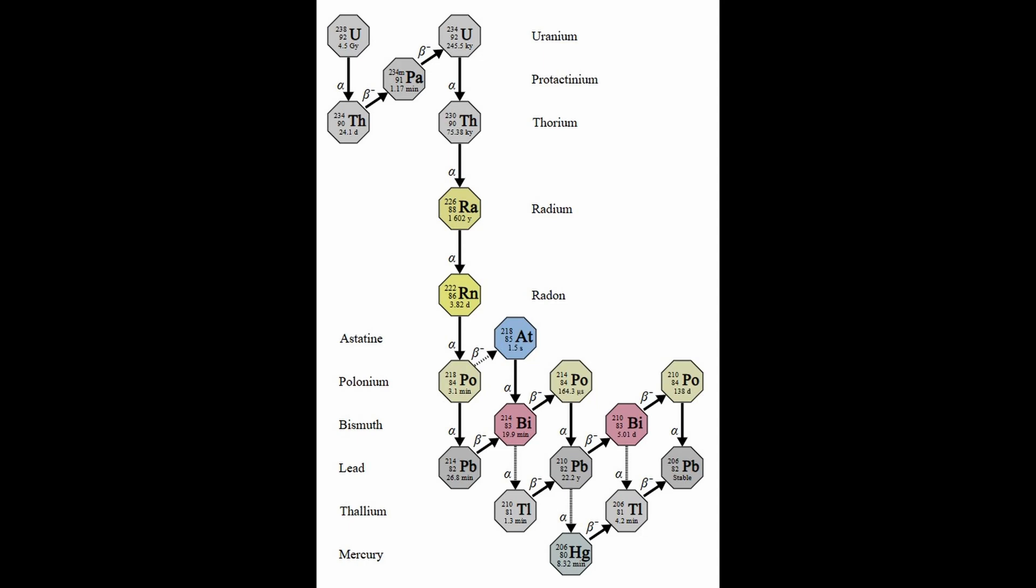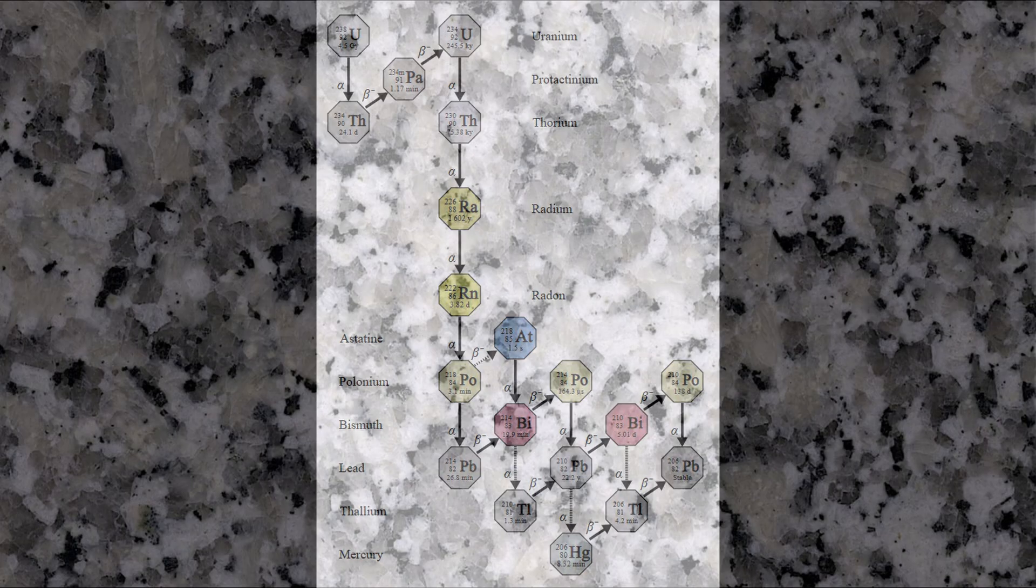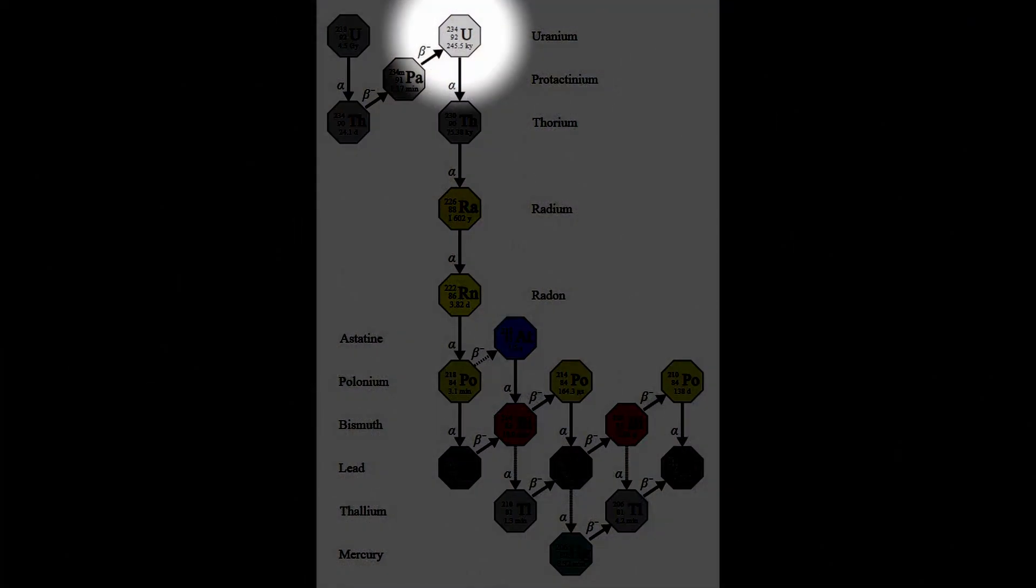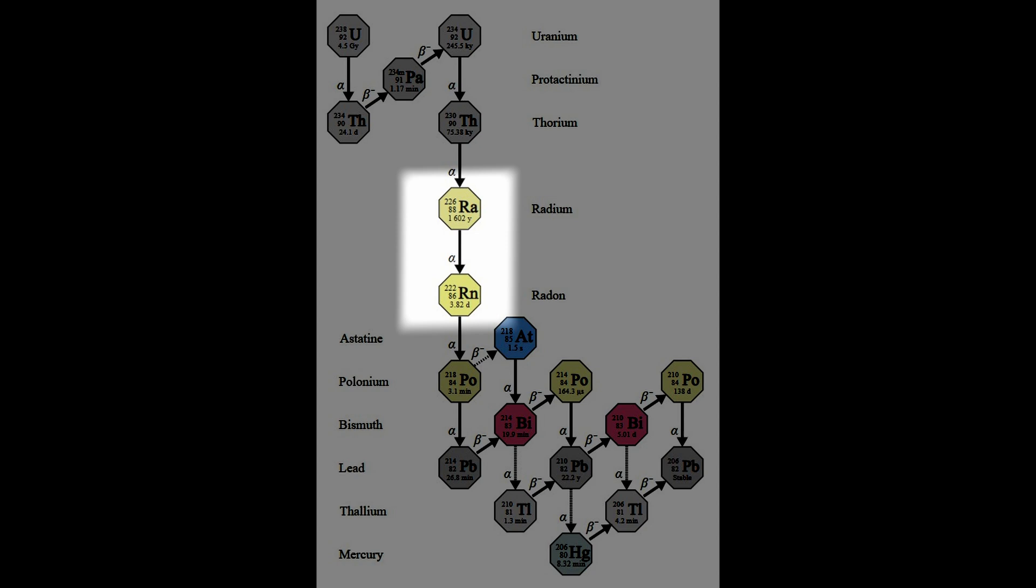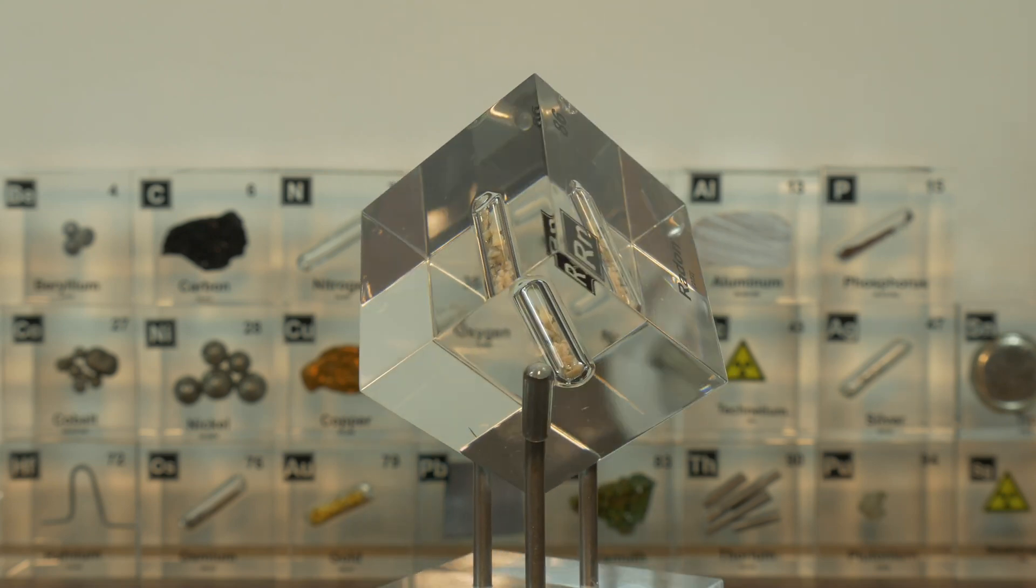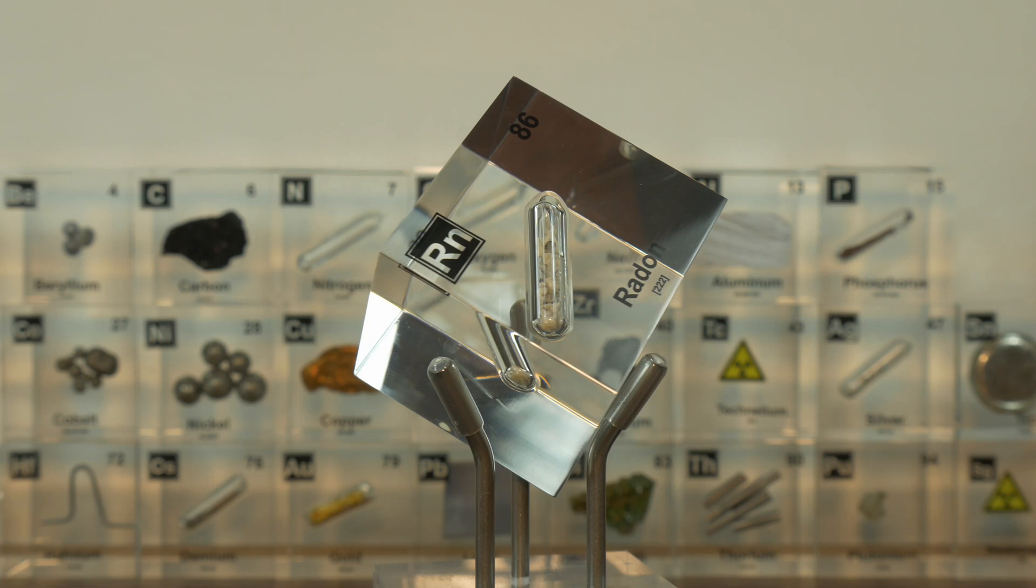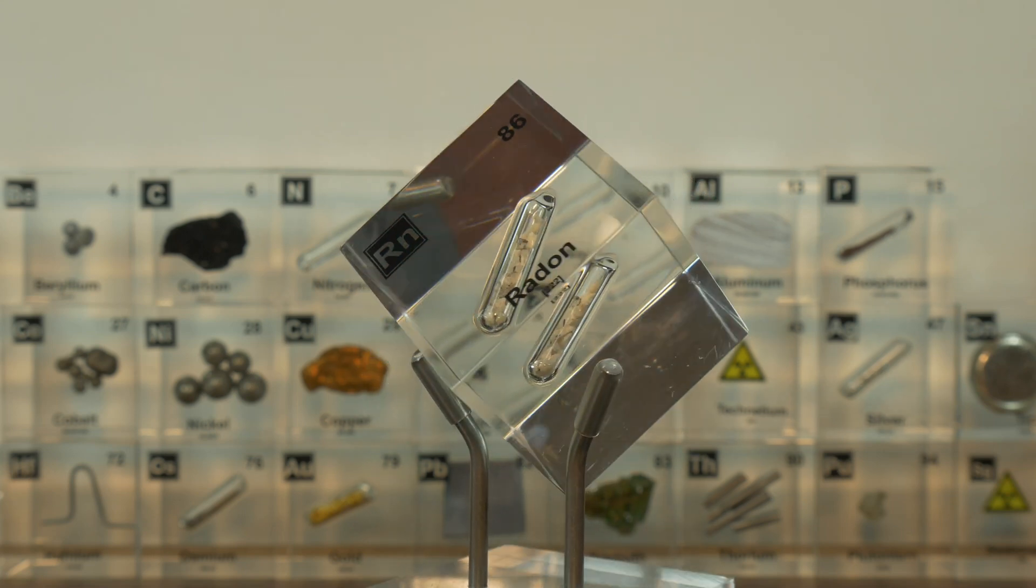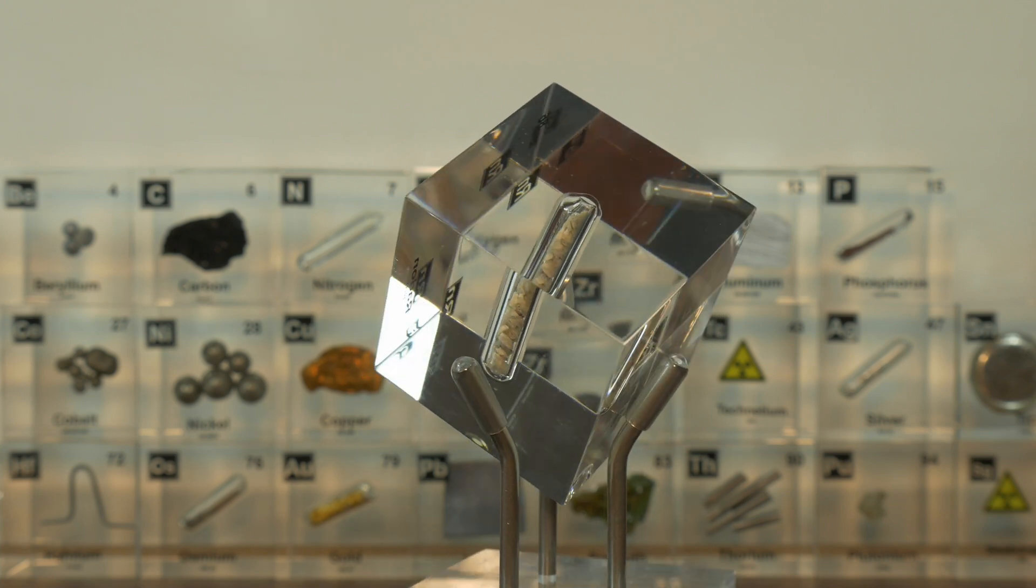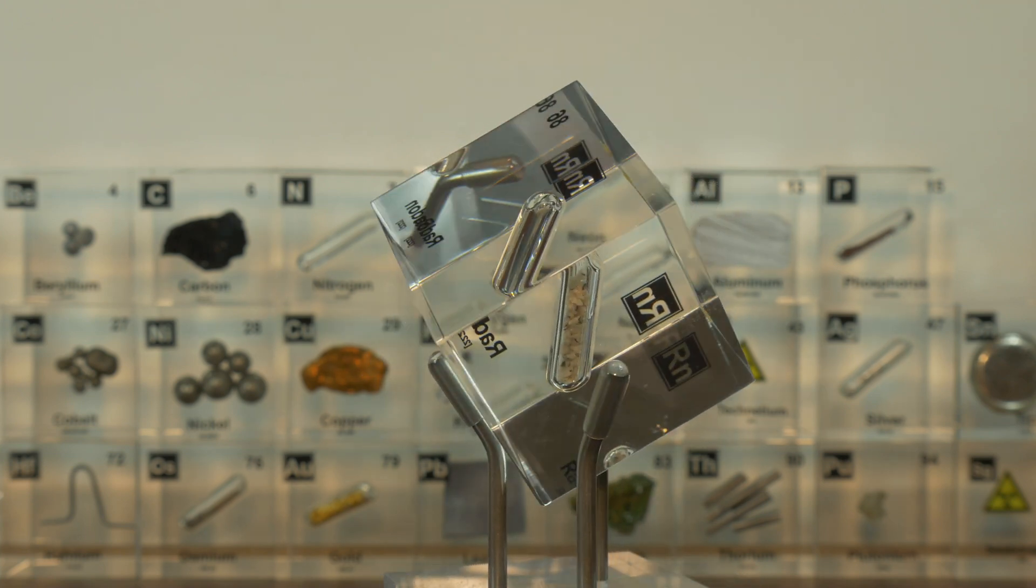Now radon's presence is directly linked to natural decay of uranium and thorium, elements that are commonly found in granite. Granite is an igneous rock and its composition often includes trace amounts of uranium. As uranium decays, it produces radium, which further decays into radon gas, also known as thoron or radon-220. Now what makes granite a significant source of radon is its porosity. The microscopic pores in granite allow radon gas to seep out and migrate through soil and rock layers. If this gas reaches the surface, it can accumulate in the air, especially in enclosed spaces like basements.